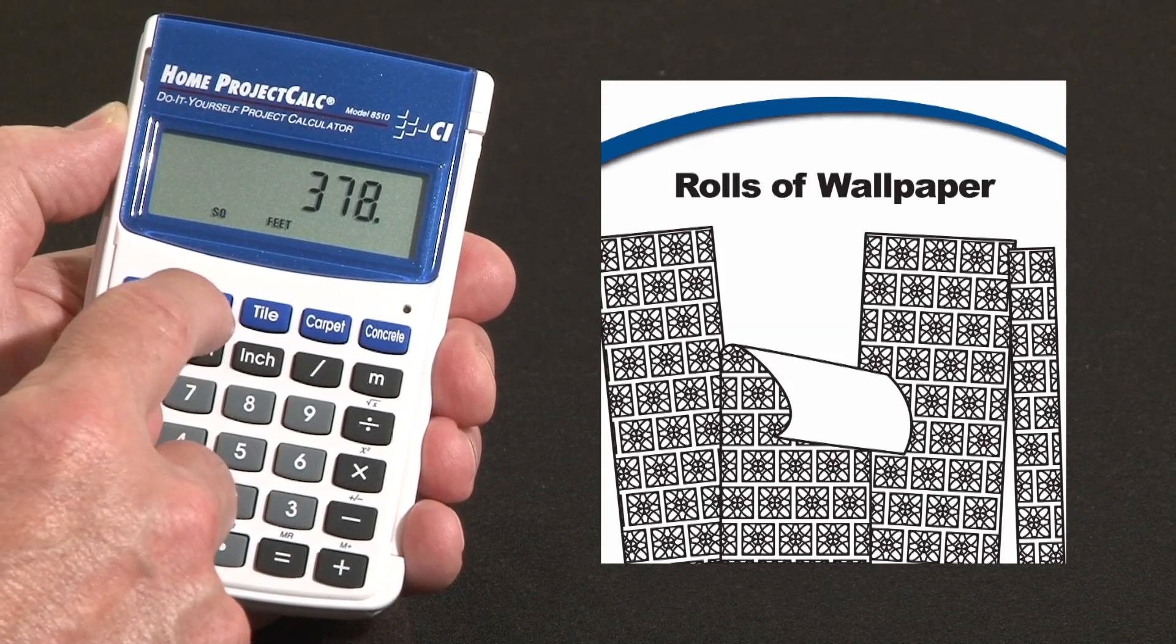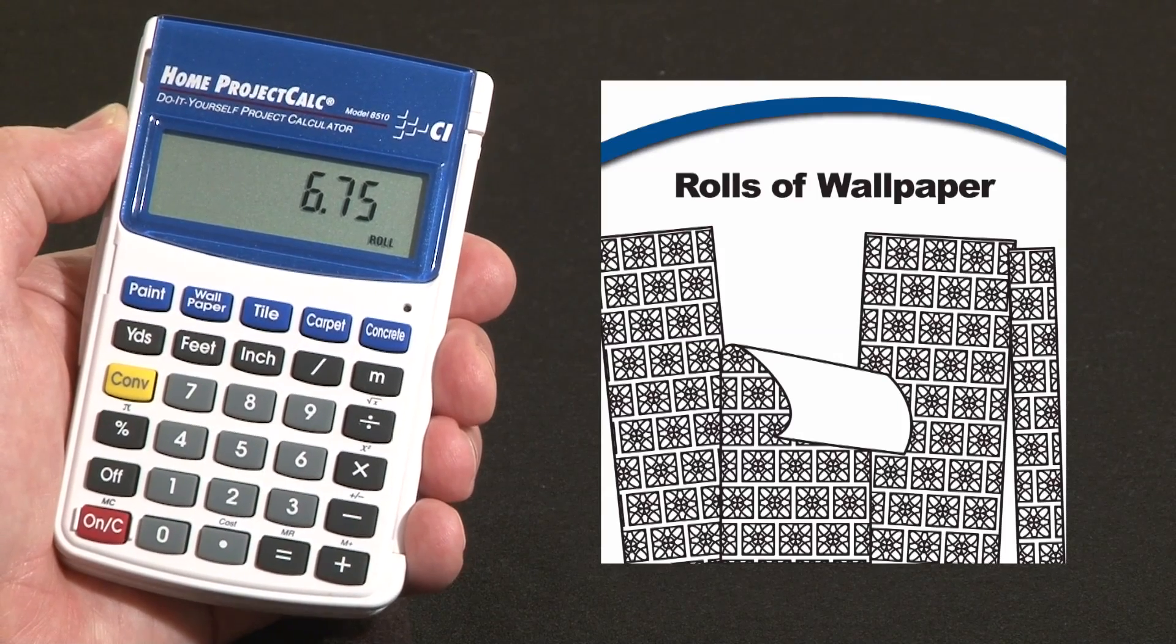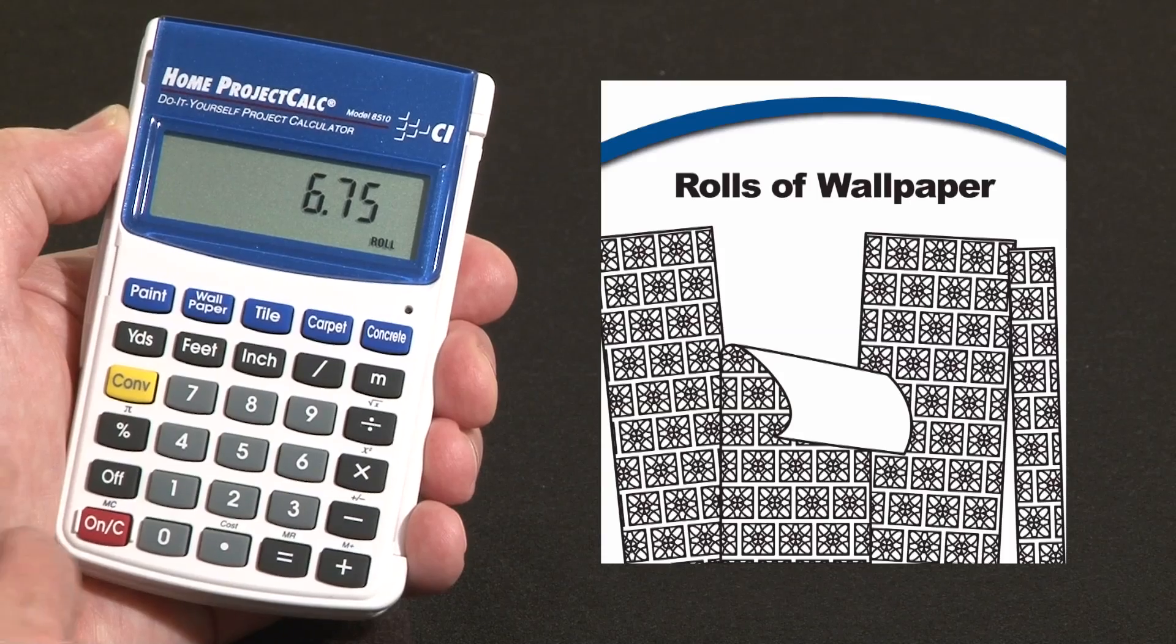So now you simply hit the wallpaper key, and it says you need 6.75 rolls. Well you can't buy three quarters of a roll, so we're going to round that up to 7 rolls.